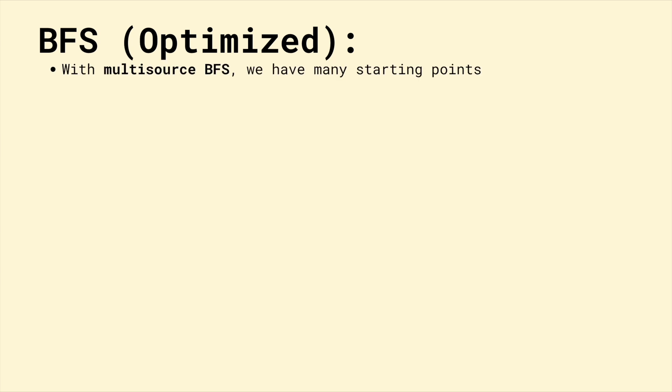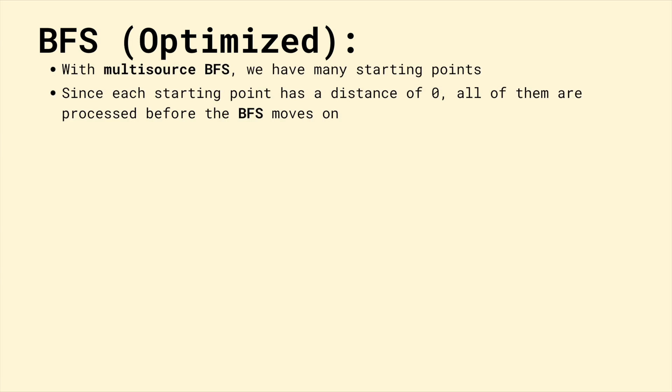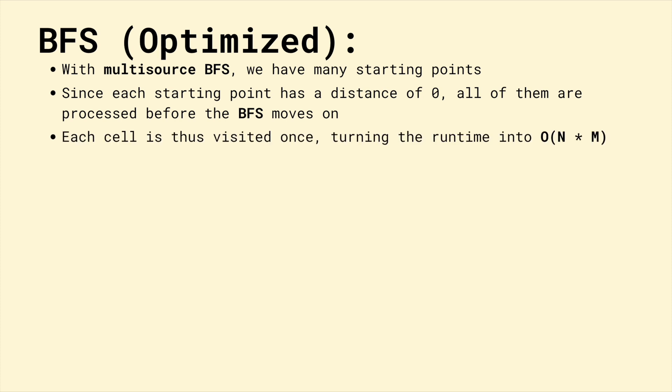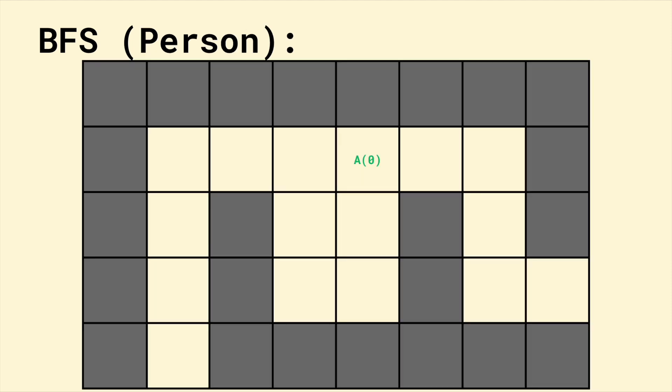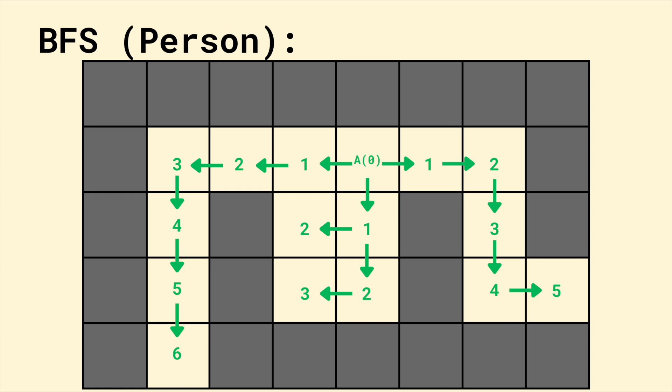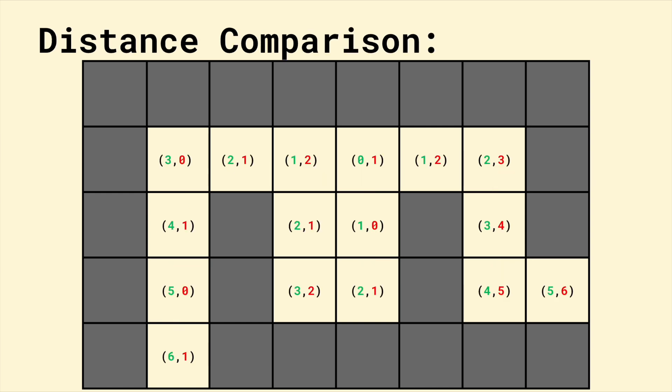Using multi-source BFS, we have many starting points. Every monster cell has an original distance of zero, and the BFS spreads out and only visits each cell once, since BFS will process the closest cells first. The runtime is now O(N×M), as in the worst case the BFS will need to process every single cell in the maze. Finally, let's look at the person's BFS — it simply spreads out to the nearest unvisited cell every time. We now have a distance from every cell to both the person and a monster. We can see the bottom cell is closer to a monster than a person, so we'll mark it as unreachable. However, the right exit is closer to a person than a monster, so we can exit there.